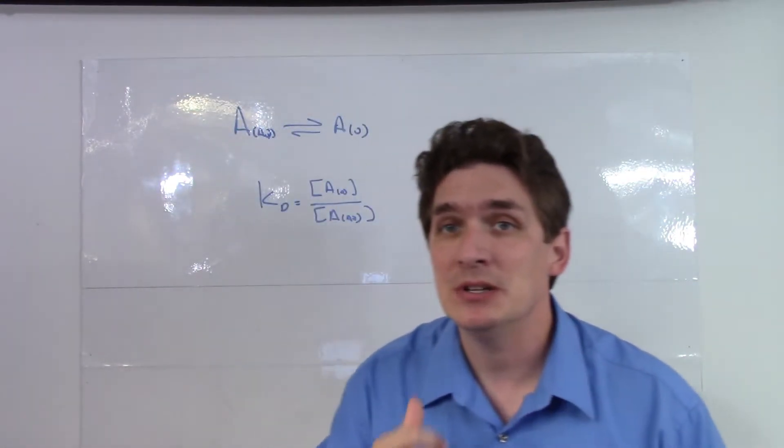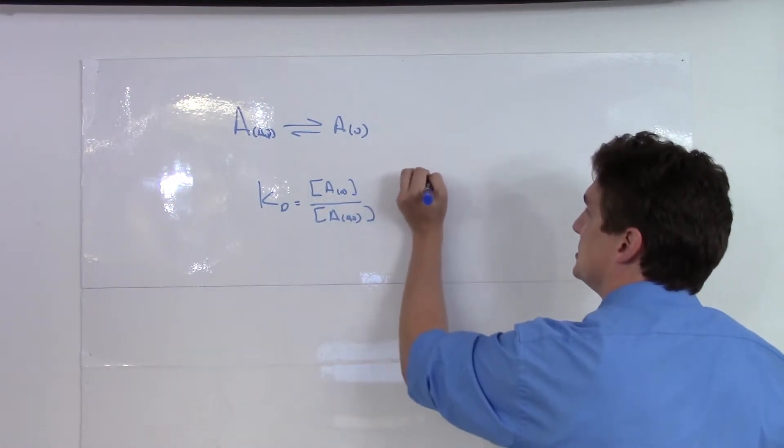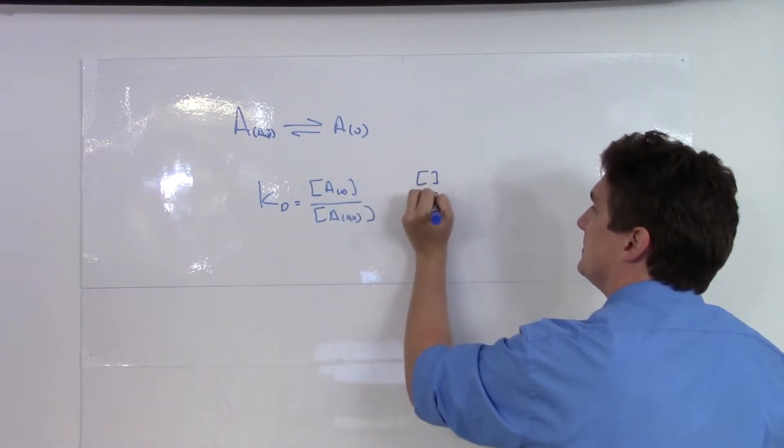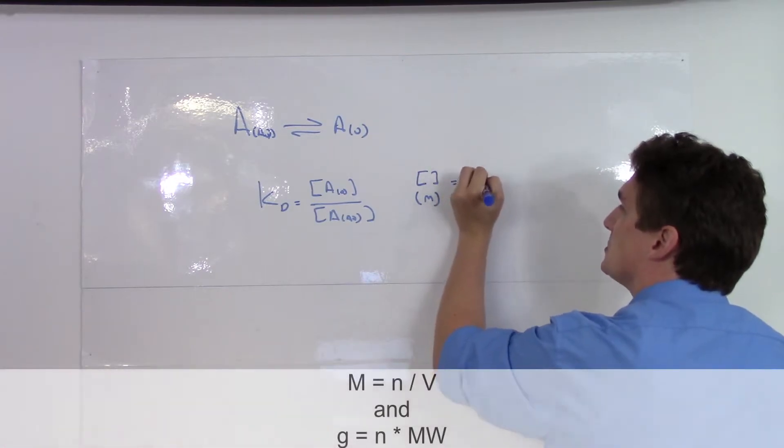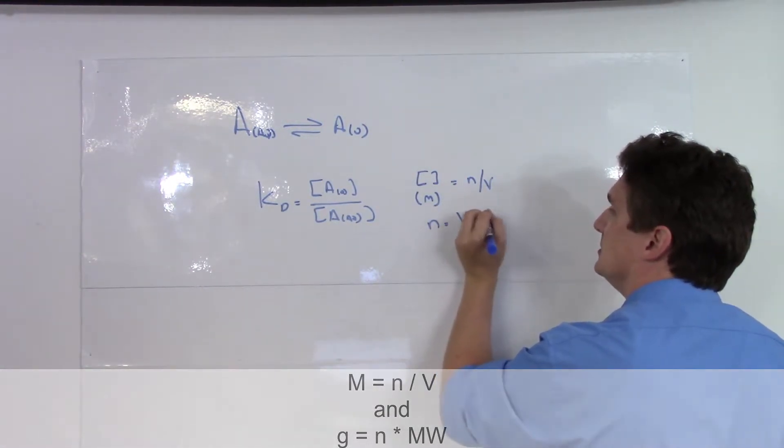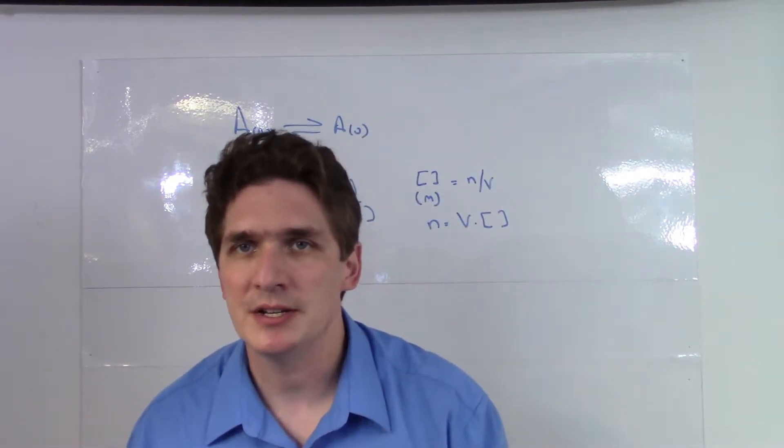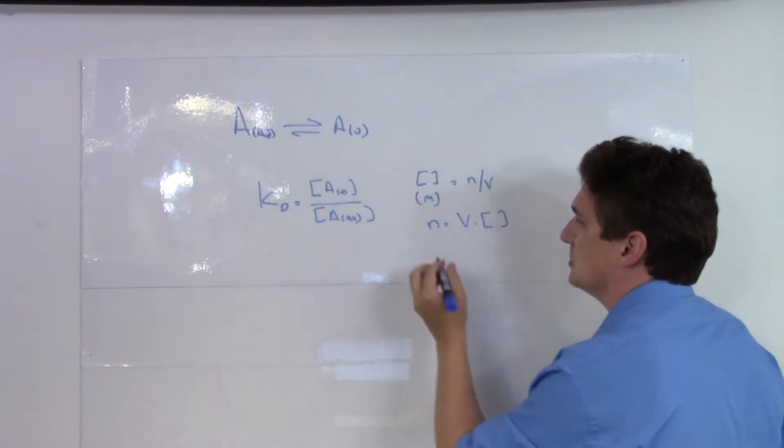Now what we're going to do is we're going to manipulate this expression. And what we're going to do is we're going to take the relationship that concentration, which is molarity, equals moles over volume, or moles equals volume times concentration. And we're going to make the further jump here, and we're going to see why in just a minute. We're going to multiply both sides by molecular weight.